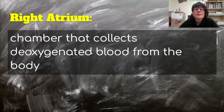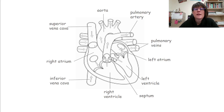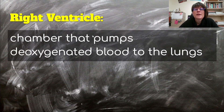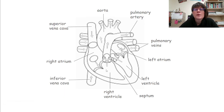The right atrium is the chamber that collects deoxygenated blood from the body. The vena cava brings deoxygenated blood in here — this hole is for the superior vena cava, and this one for the inferior. From there, the blood goes to the right ventricle, which is the chamber that pumps deoxygenated blood to the lungs. There is a valve between the right atrium and right ventricle.